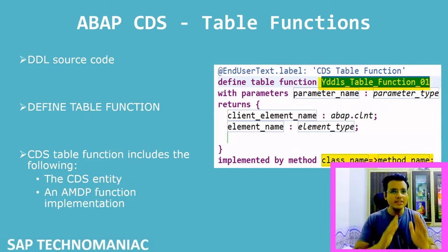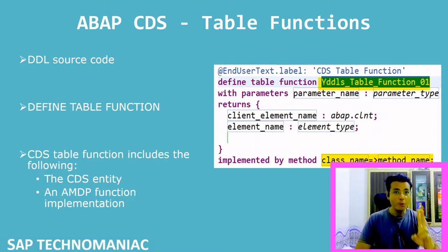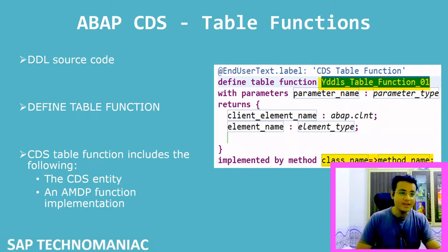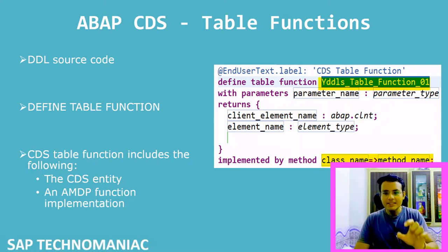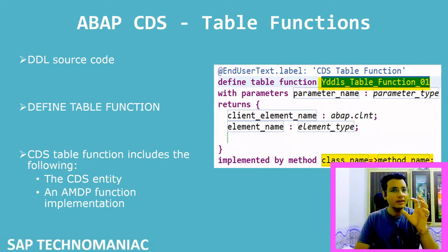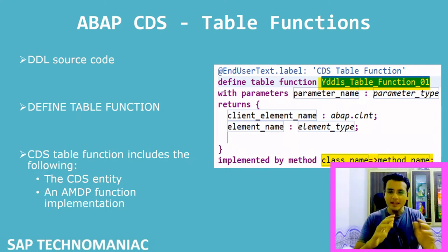Whenever you create a CDS table function, there are two parts. The first part is the CDS entity of the CDS table function. The second part is the AMDP function implementation — the class name and method defined using 'implemented by method'. This is called the AMDP function implementation, and we will discuss it in detail shortly.